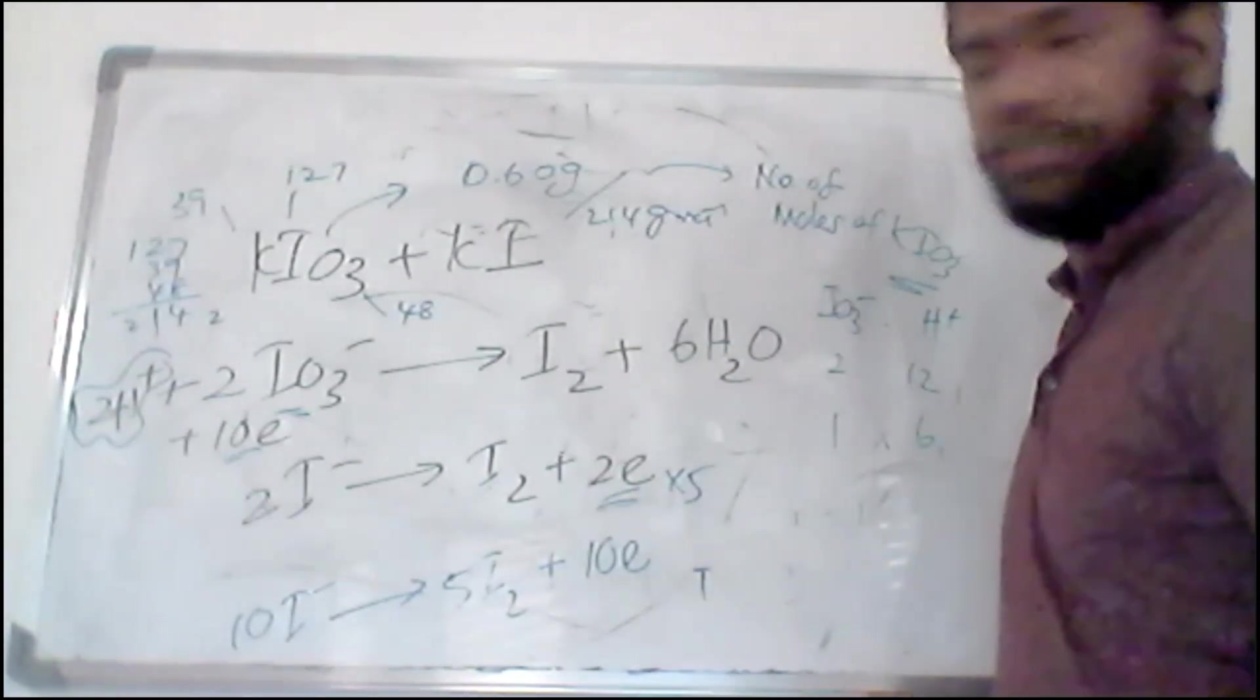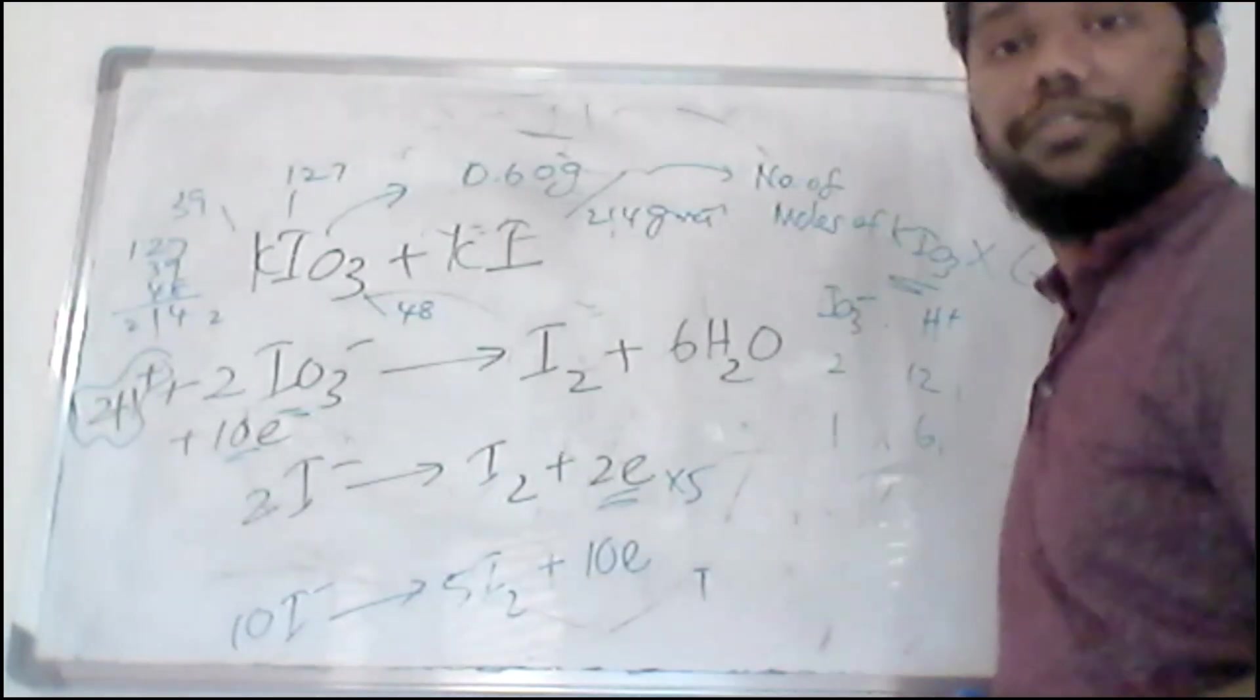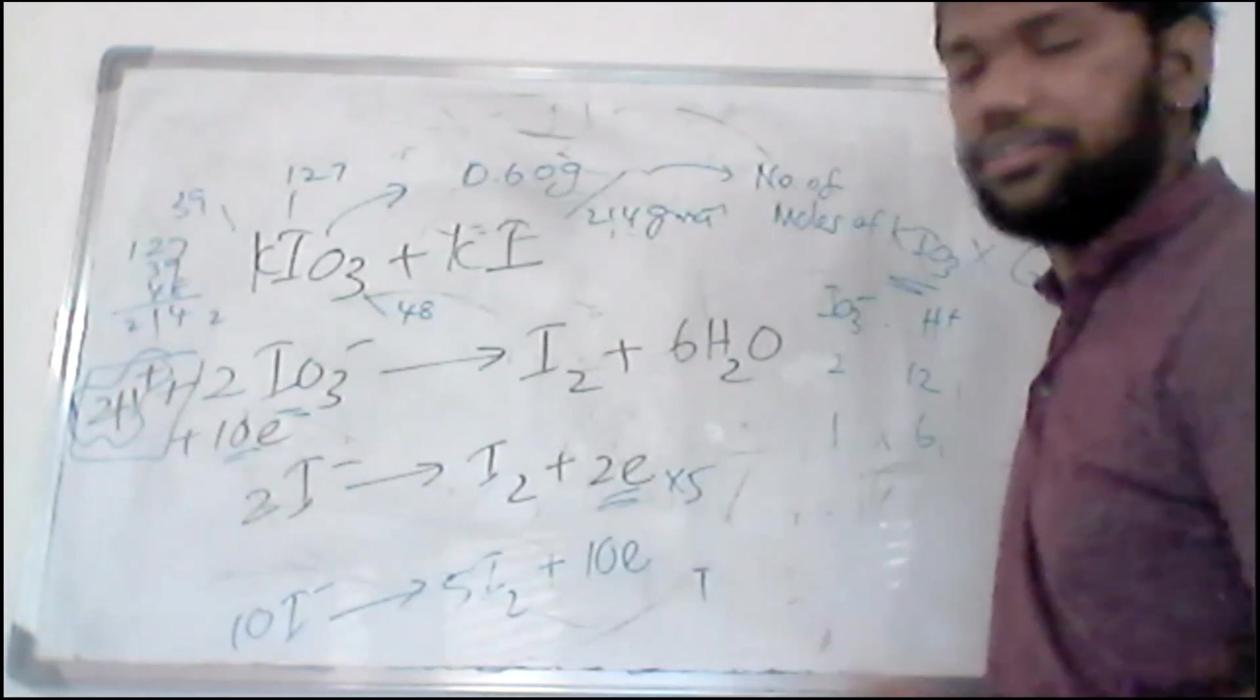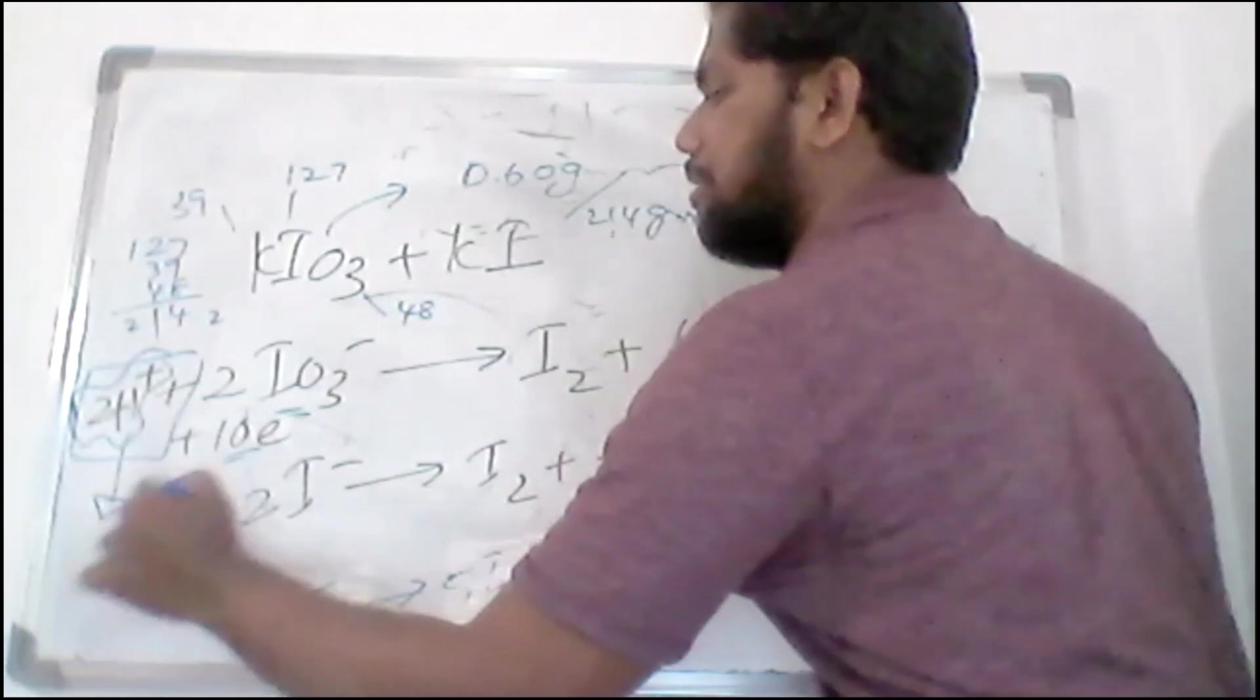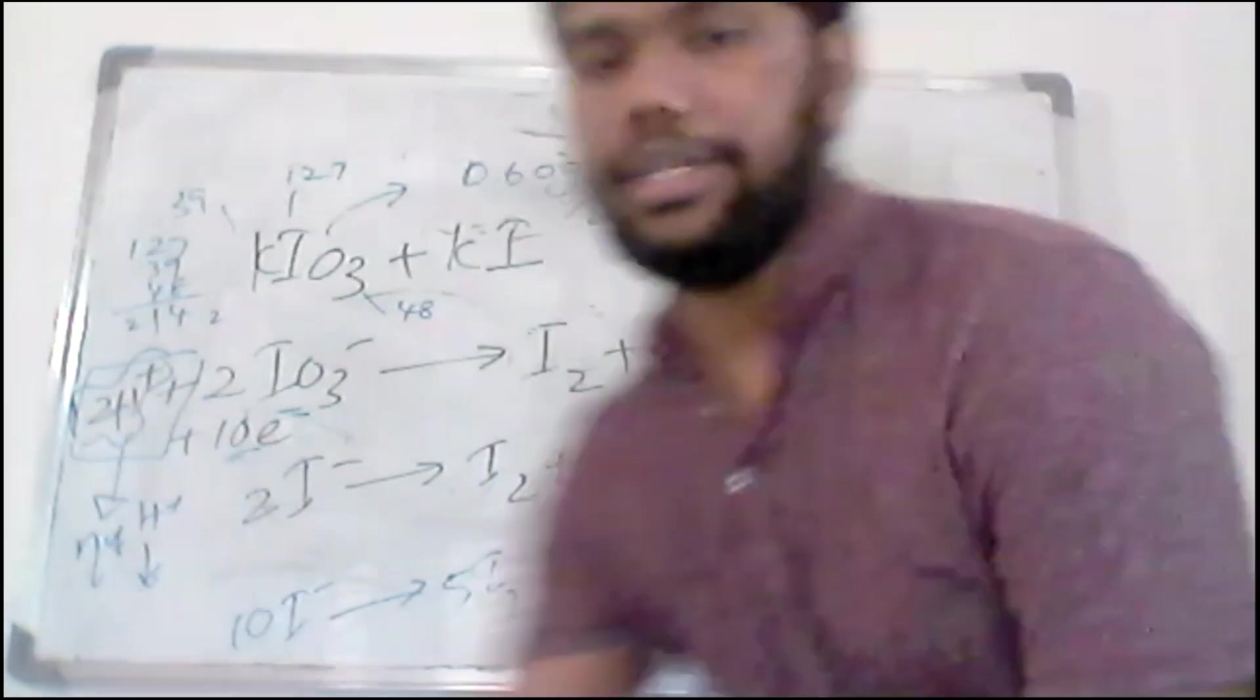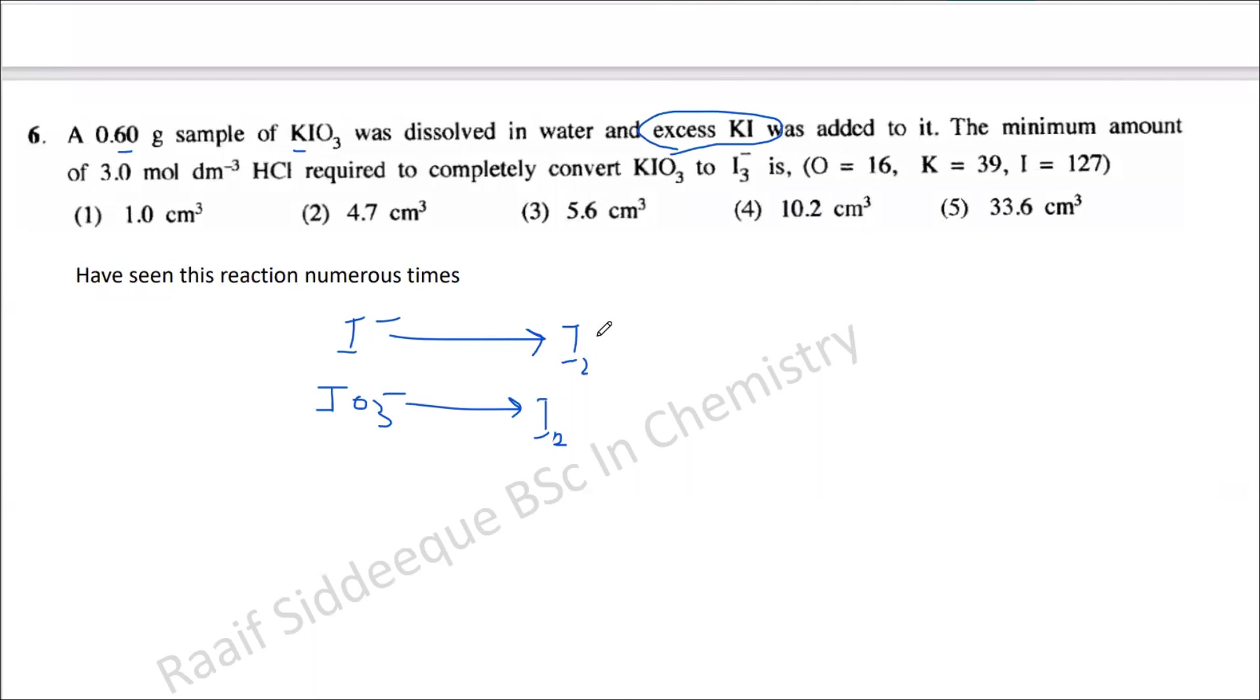So if you know the number of moles of IO3-, you can multiply it by 6 to get the number of moles of H+ that is necessary in order to carry out this oxidation and reduction, redox reaction. So when you know the number of moles of H+, what you can do - they have given the concentration - then you can find the volume that is necessary. You can do the calculation and you will see you will get this answer. The calculation is very simple.